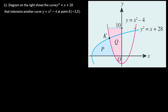The red color curve has the equation y = x² - 4, which intersects with the blue color curve having the equation y² = x + 28. They intersect at point K with coordinates (-3, 5).